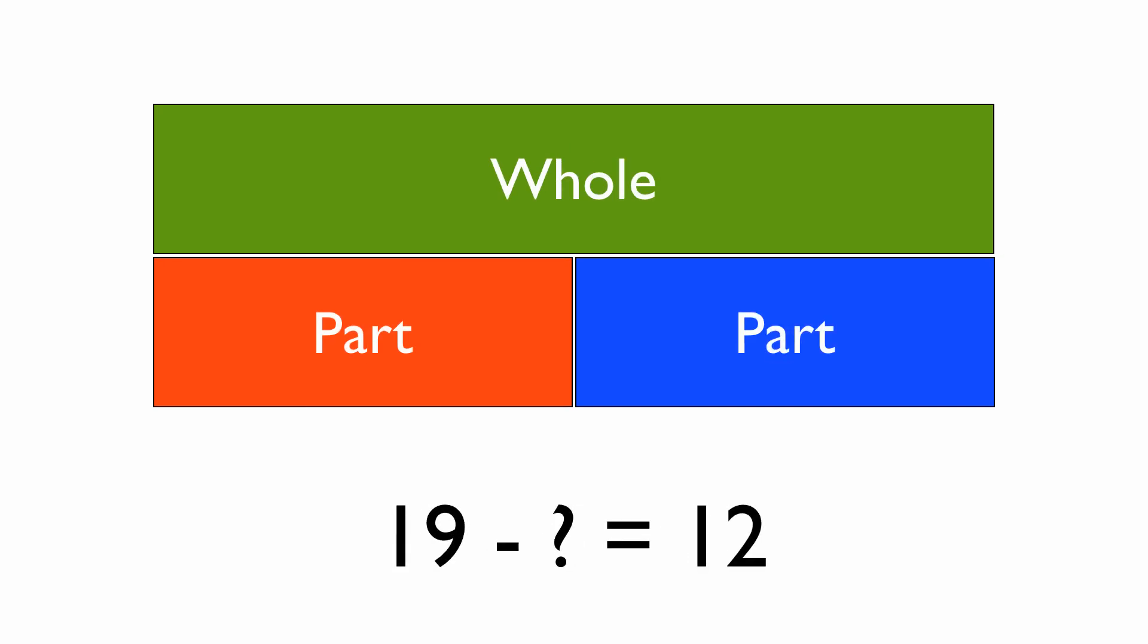But it's less straightforward when the thing that we're looking for is in the middle. Here we know that the whole is 19 and we're taking away something to leave us with 12. So the whole is 19, take away one of the parts, leaves us with 12.